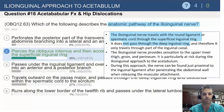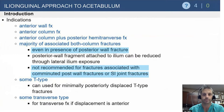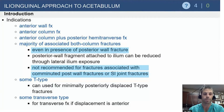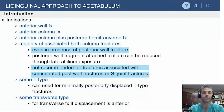The ilioinguinal is an anterior approach involving anterior fracture lines — anything you need to get to from the front. It's a tried and true method and can be a big approach using all the windows. On most tests, they associate the ilioinguinal — or even STOP — with both column injuries. If choosing between approaches, look at where the displacement is: anterior or posterior.